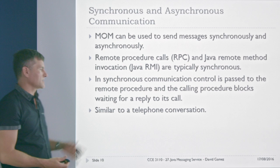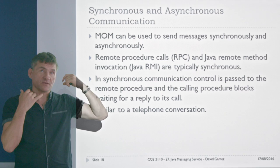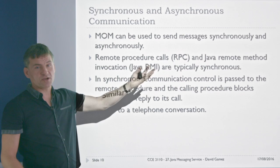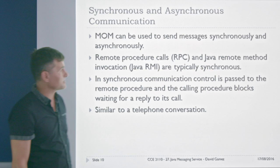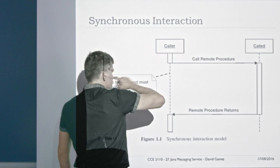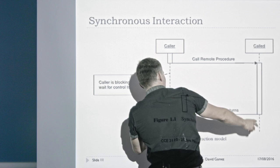It's like a telephone conversation because I say something and the person listening is just listening — they can't respond until I finish speaking. Then my interlocutor replies and says something else. So in synchronous interaction, the caller invokes the remote procedure and is then doing absolutely nothing while the remote object does all the processing. Once it returns, the caller can get on with more work.